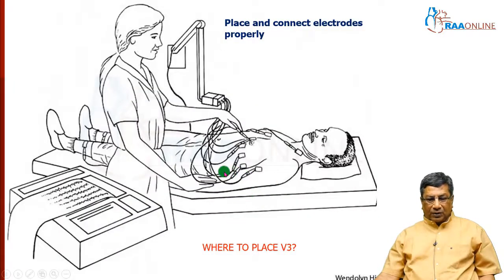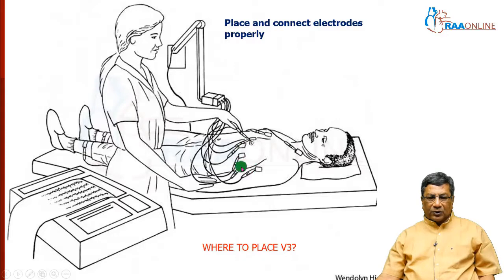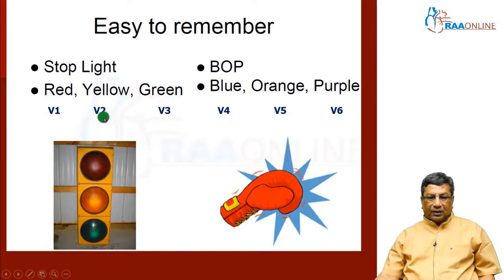Please remember to correctly connect the electrodes and correctly place the chest electrodes on the appropriate places to record the correct ECG. Connect the electrodes properly. To test a technician, ask them to place V3 — V3 should be placed between V2 and V4. Teach the paramedics according to the color.